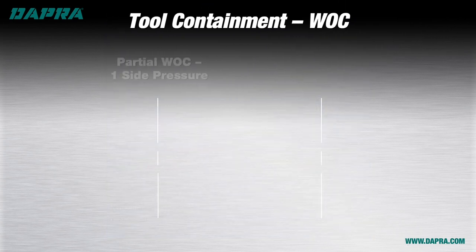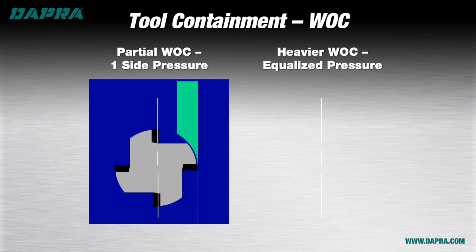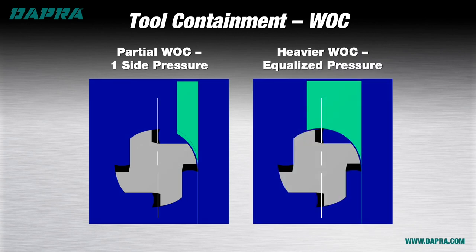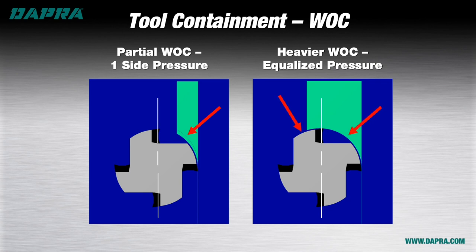An often overlooked aspect of long-reach milling is the direction of the deflection force. If your width of cut is only a small portion of the tool diameter, all deflection force is coming from one side, allowing the tool to push away and promoting deflection. If your width of cut places material on both sides of the tool centerline, you create offsetting deflection forces that help stabilize the tool in the cut. For this reason, we often recommend 60 to 70 percent width of cut as a target for long-reach milling applications.